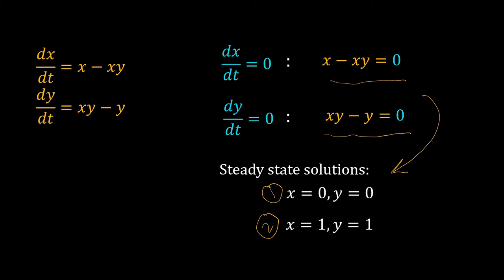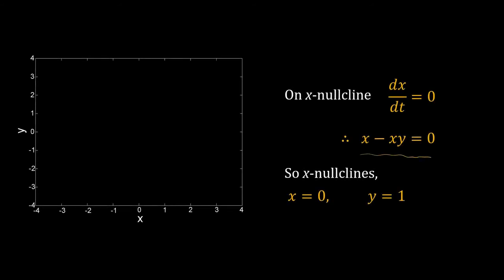There is also a graphical way to identify all possible steady states in a system. Draw the axis, draw the x nullcline. x nullcline is a line on which the derivative of x is 0. Take the differential equation for x and set dx/dt equal to 0. We get x - xy = 0.